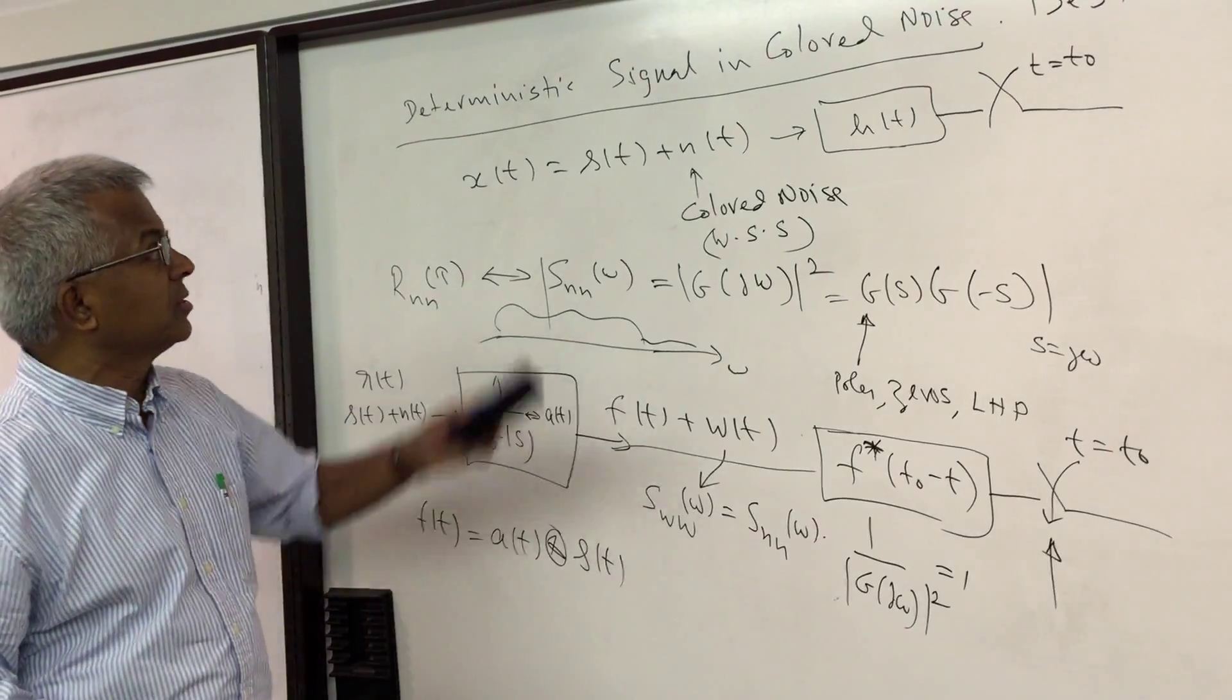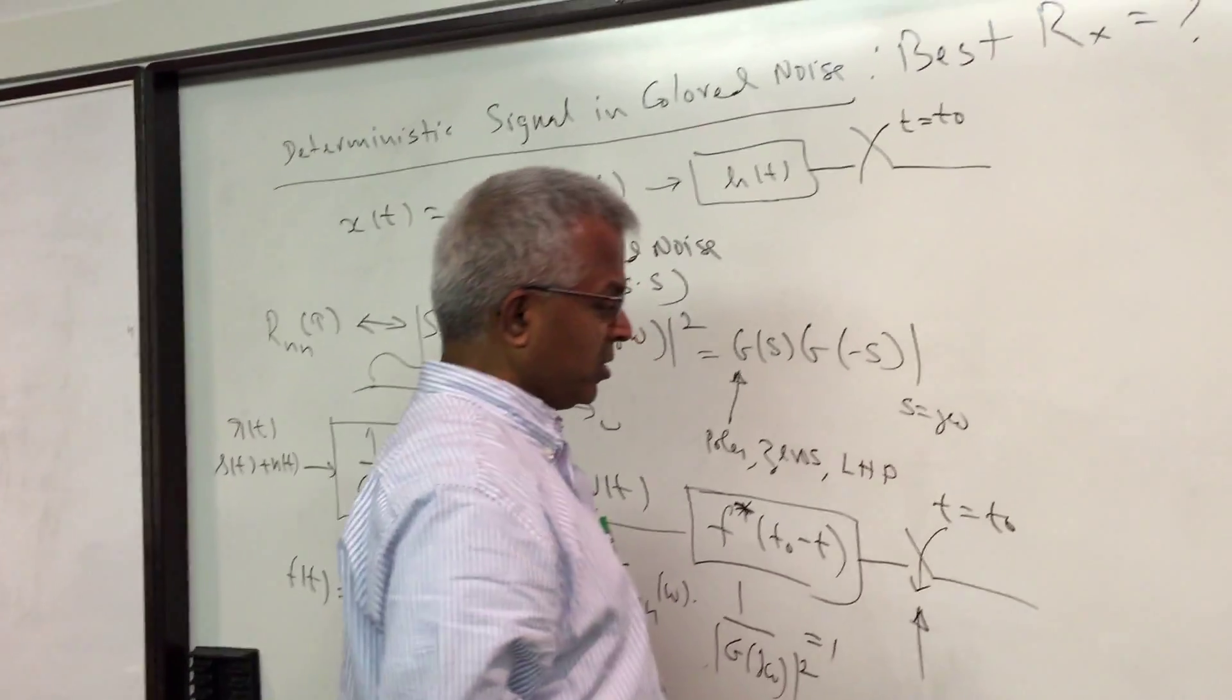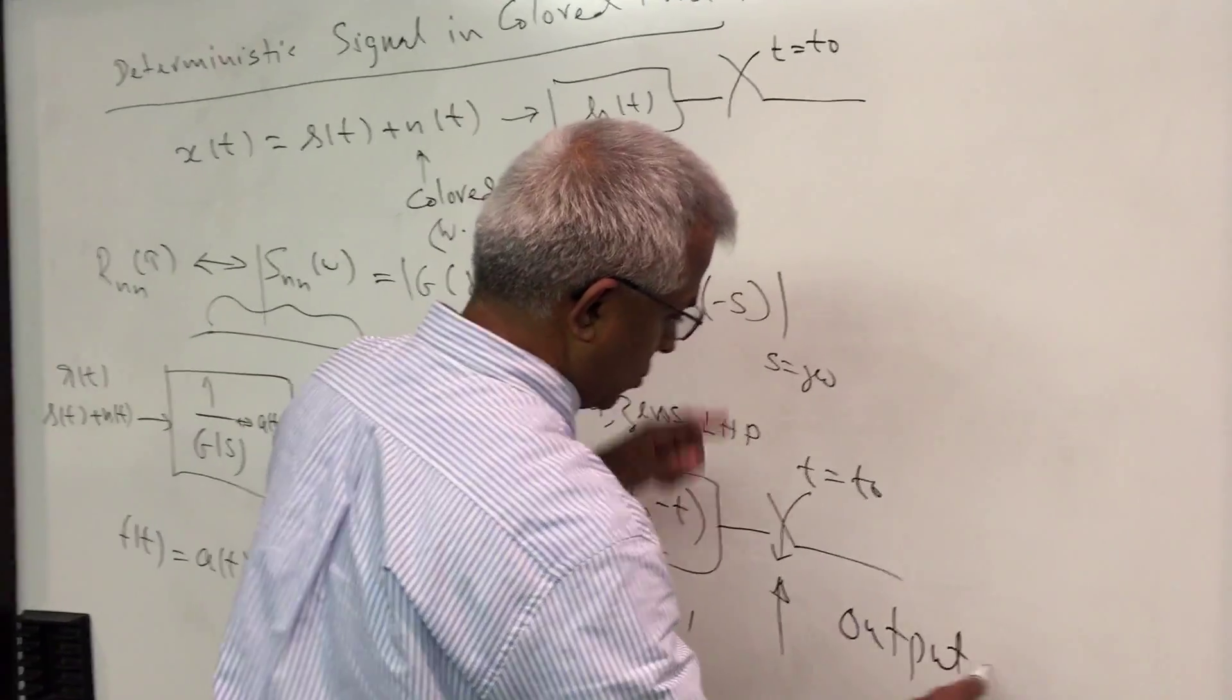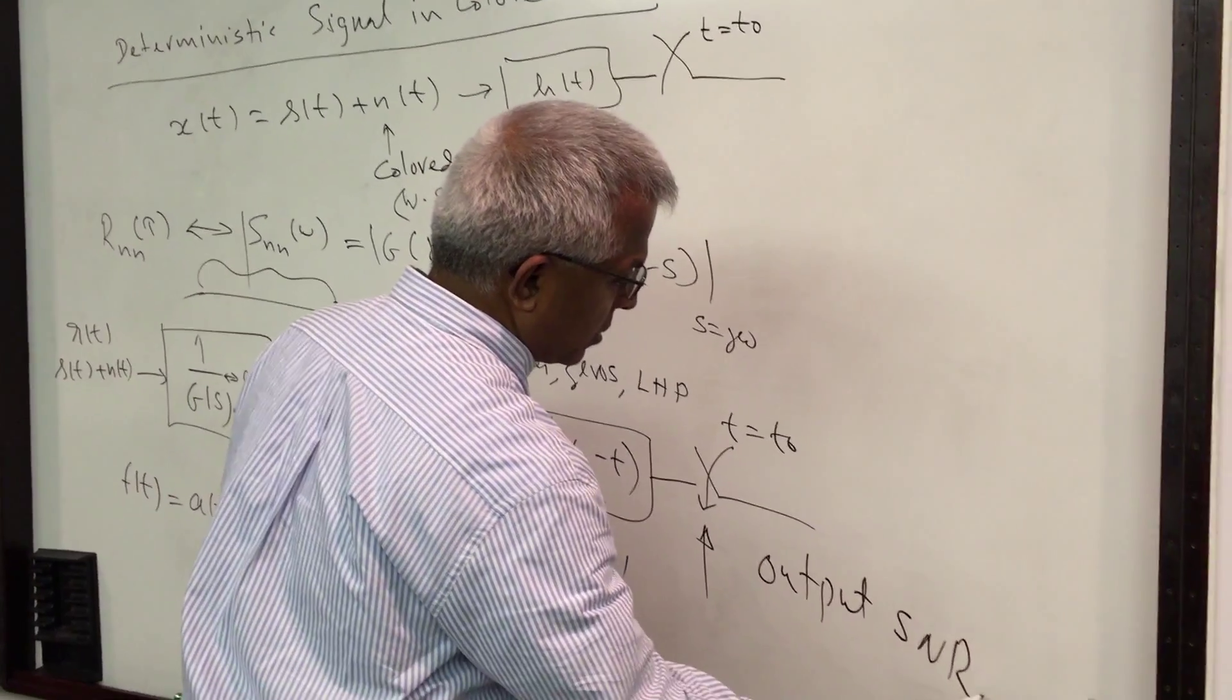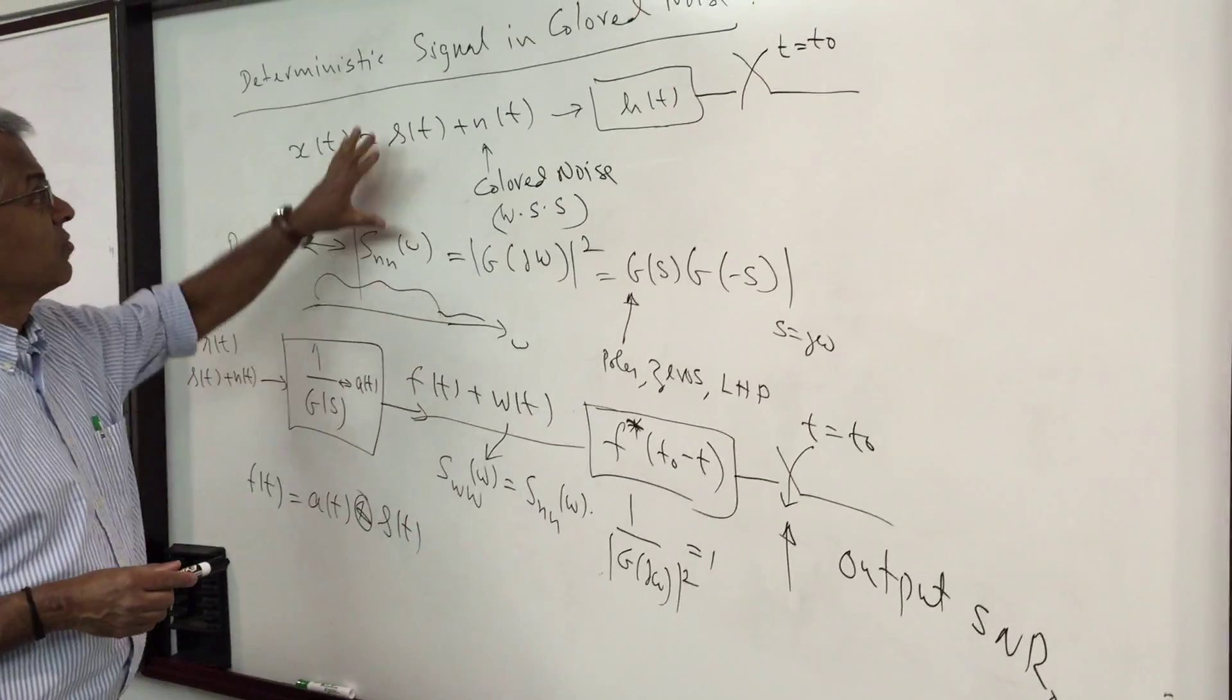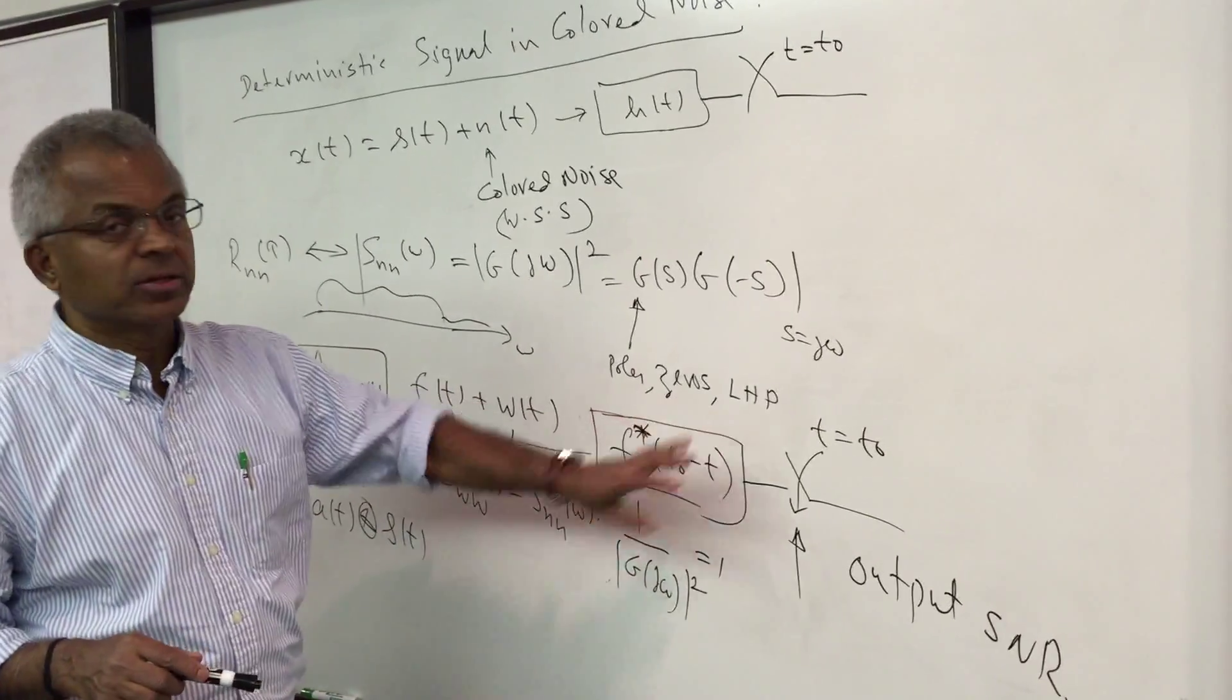Which maximizes the output SNR at t equal to t₀. And of course if the noise is white you don't have to go through this - just the matched filter is the ordinary matched filter which is matched to whatever the deterministic signal is, is the optimum.